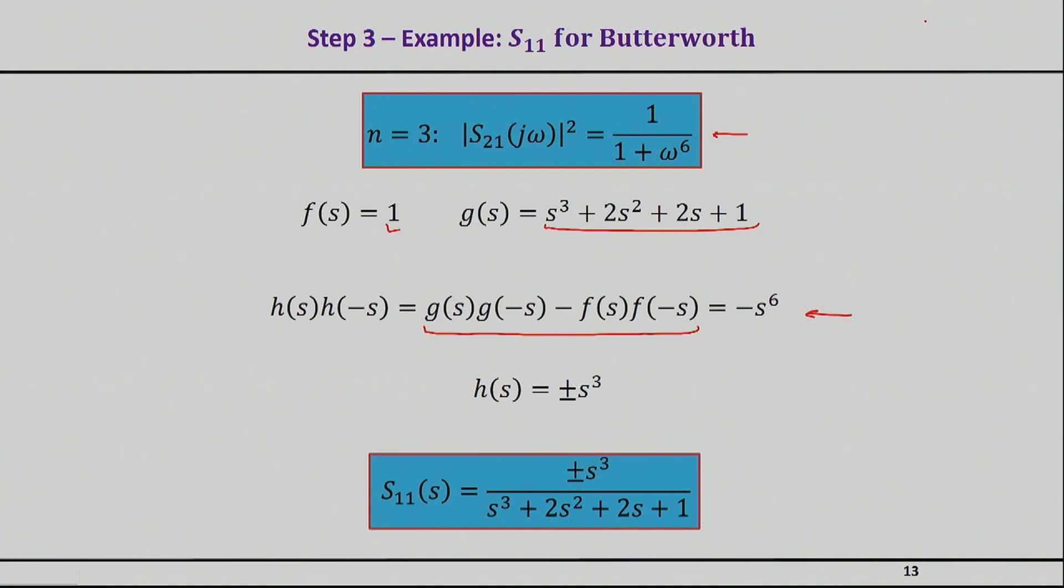And it's interesting that h(s) in that case will basically have two solutions: plus or minus s cubed. Because when you multiply plus or minus s cubed, and then you take the h(s) times h of negative s, you will basically end up with negative s to the sixth, which is what is needed.